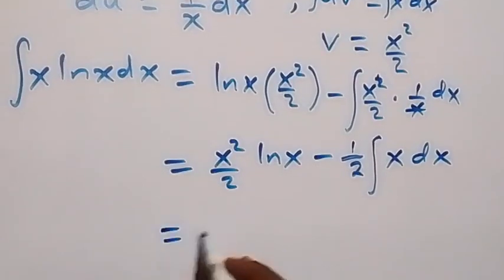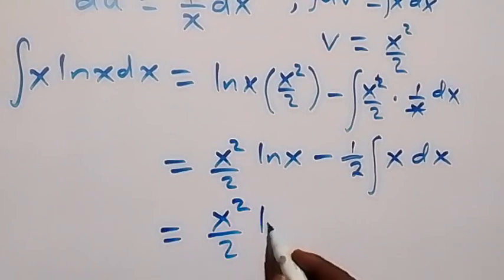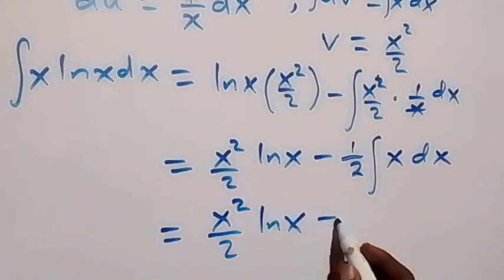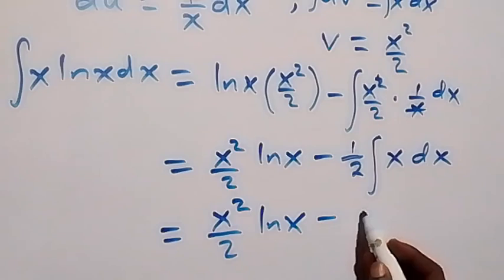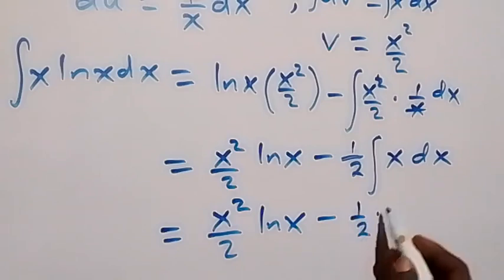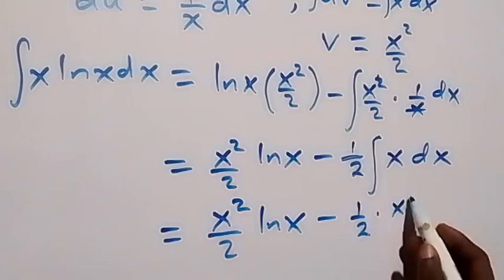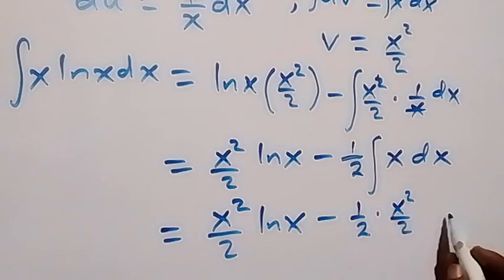So that is here we have x squared over 2 ln x now, then minus here we have half times integral x is x squared over 2, then we have plus arbitrary constant C.